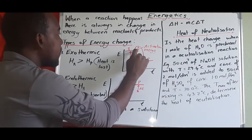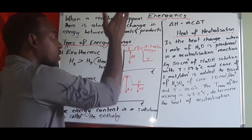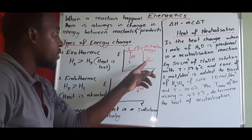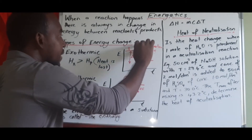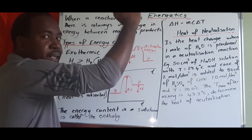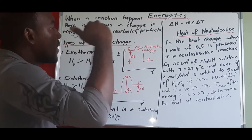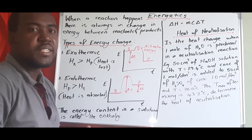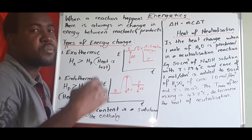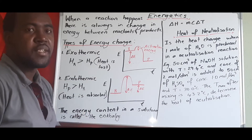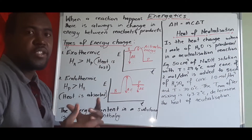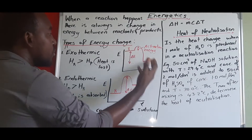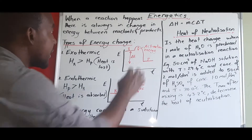A new term here is activation energy. We notice that from the reactants, the energy has to go up before the reaction can start producing products. This spike from the reactant energy up to the maximum energy is known as activation energy. Activation energy is the energy required for a chemical reaction to start — if you don't have that amount of energy, the reactants will not combine to give you products.